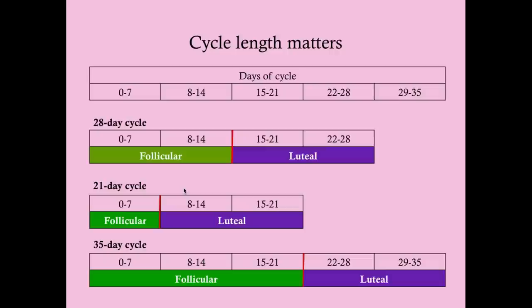A 28-day cycle has 14 days in the follicular phase and 14 days in the luteal phase, divided by ovulation. Women have varying cycle lengths — 25, 32 days, and so on. What varies is the follicular phase — the time between the end of menstruation and ovulation. The luteal phase, during which the corpus luteum secretes progesterone before involuting if pregnancy doesn't occur, is fixed at around 14 days for essentially all women.